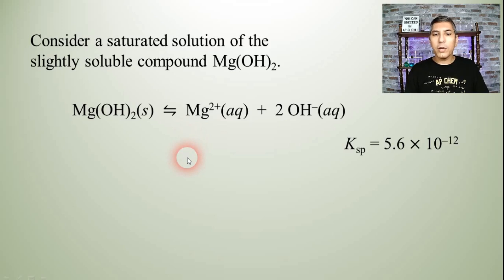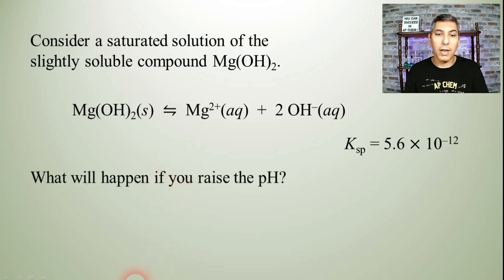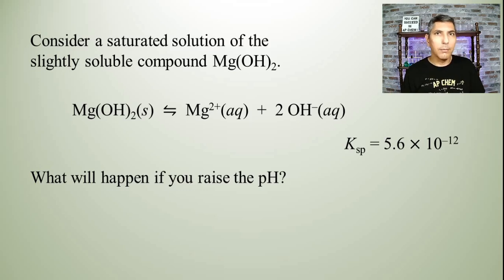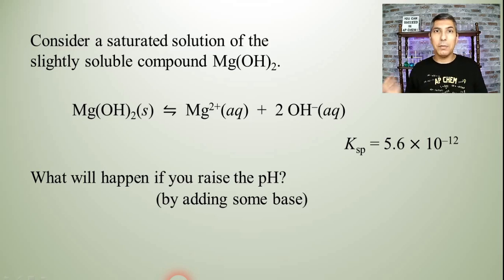Now, let's imagine that we're going to take this saturated solution of magnesium hydroxide, and we're going to change the pH by raising the pH. Now, before we talk about what the process is, let's think about how we'd actually go about doing that. How would you raise the pH of something? Well, probably the most common way is to add some hydroxide, adding some base. It might be sodium hydroxide. It might be potassium hydroxide. In some way, we're raising the pH by adding hydroxide ions to this mixture.